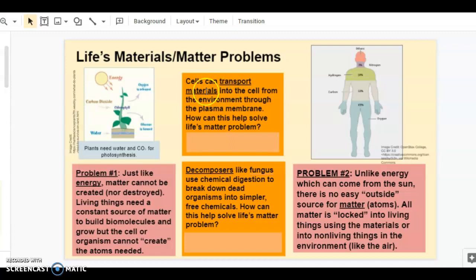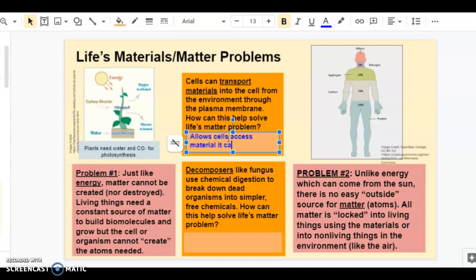First, cells can transport materials into the cell from the environment. How does this help? Instead of creating them, it allows cells to access material it cannot create. Decomposers, like fungus, use chemical digestion to break down dead organisms into simpler, free chemicals. How does this help? It unlocks the material that was bound in the organism so that it can be reused.